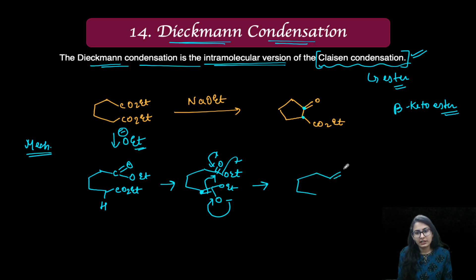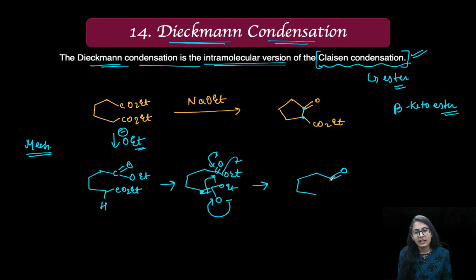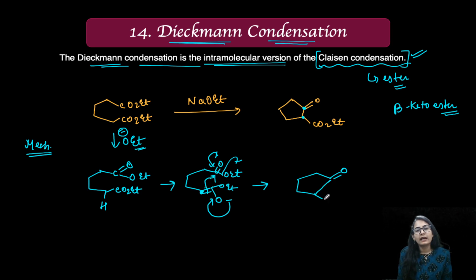What is happening is you just have the intramolecular cyclization reaction. This is the cyclization — from this carbon you get a five-membered ring like this, and there goes the remaining ester part.